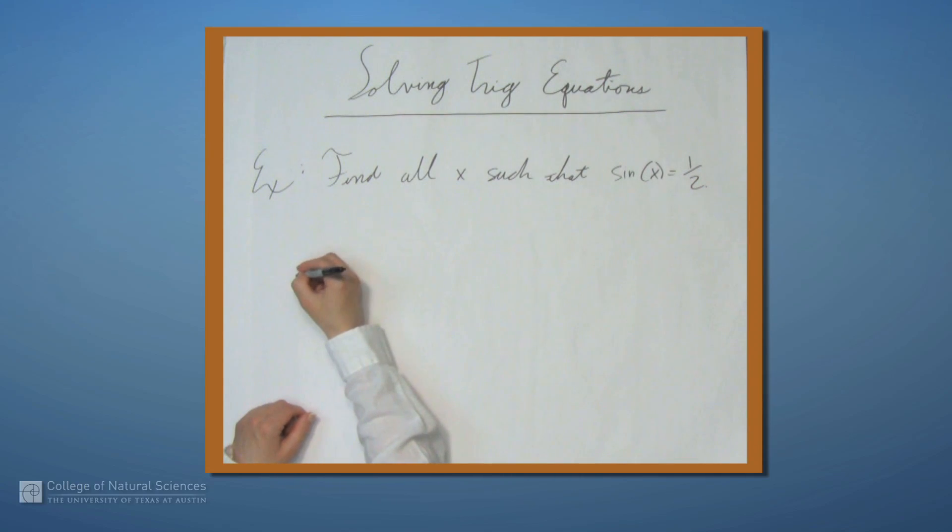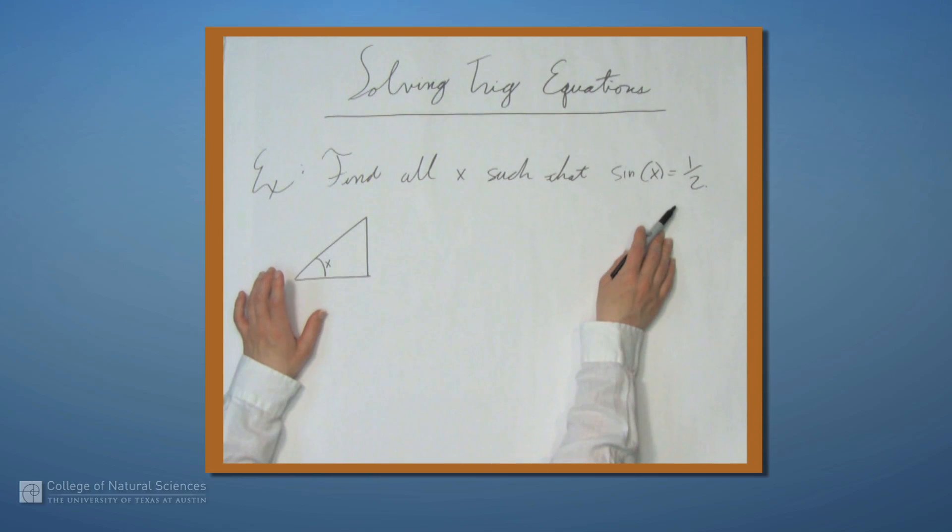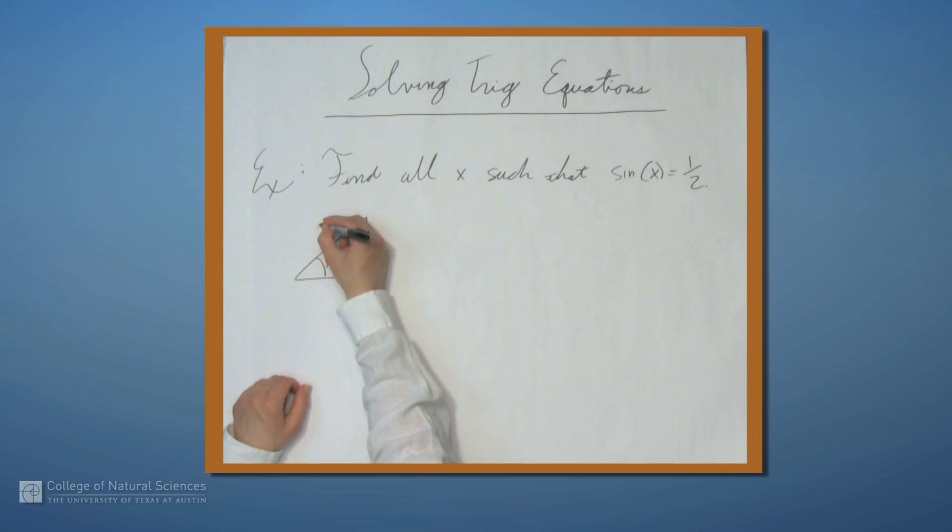So let's start by drawing a triangle. And we're looking for x. So let's say that this angle here is x, and we want to make sin equal to 1/2. Well we know that sin is the ratio of the opposite side length over the hypotenuse. So that means that we can label this with 1, and this with 2. And these are two of the three sides of a triangle that you should remember, namely 1, 2, and then this is the square root of 3.